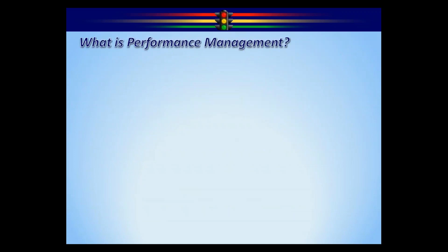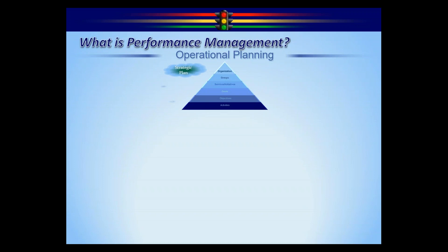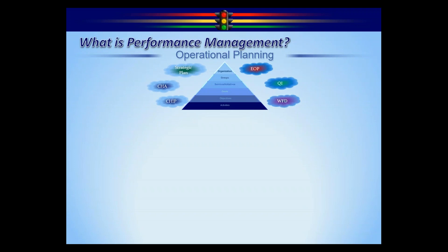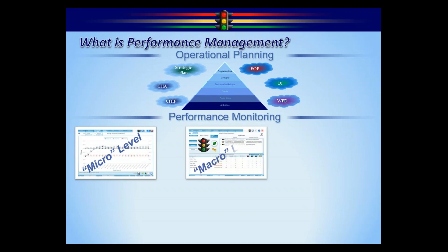The definition of performance management when it comes to the dashboard is a pretty standard methodology with three basic steps: creating your operational plan — a specific group doing a specific set of activities in a specific timeframe — then monitoring that plan on several different levels: your macro level, maybe your health department level, your group level dashboard, and then we go a step further to monitor objectives and activities to catch anything that might go awry. We also have a public interface where you can report how you're doing on all your goals, services, and initiatives — not only to the public, but many use this feature for reporting to the board of commission.